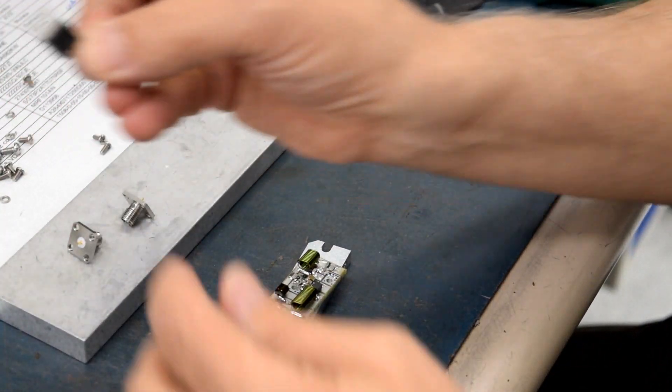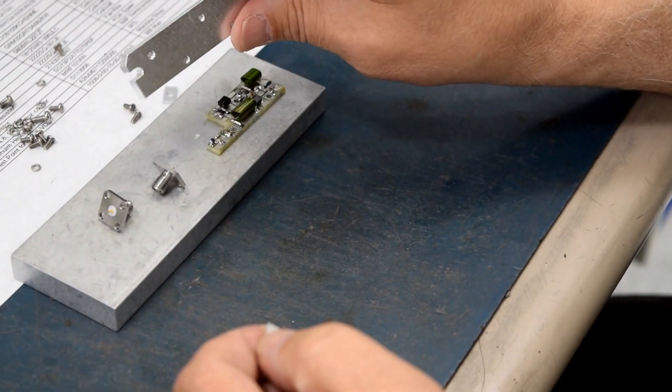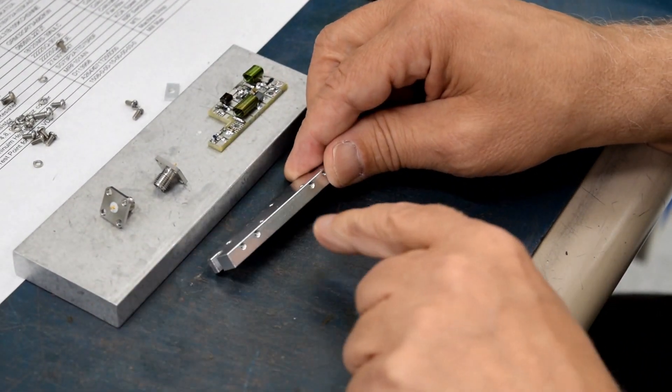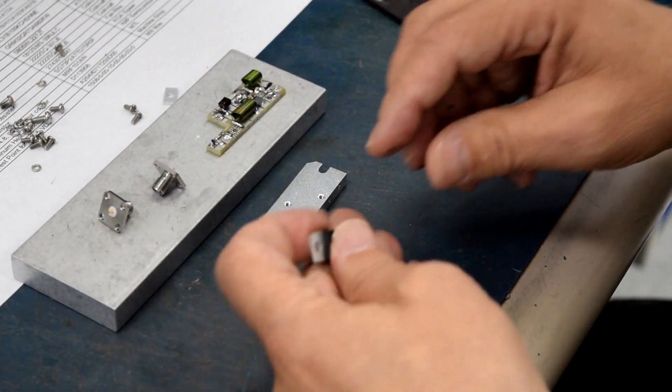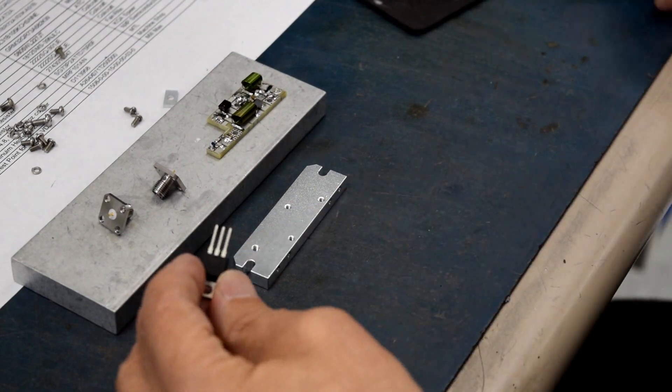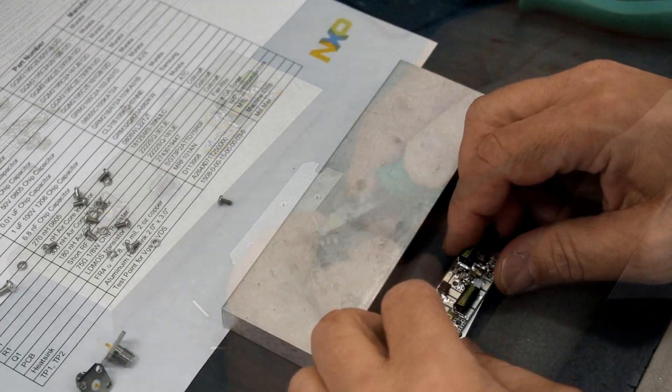Next step is to mount the board and the connectors to the base plate. So the base plate has holes towards one side, they are on the board side. Also we want to trim the power transistor right at the shoulder.